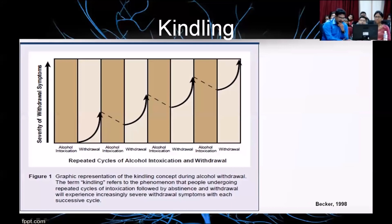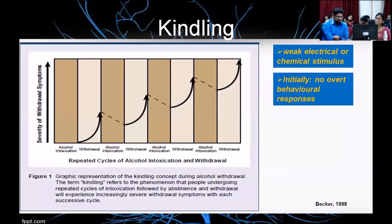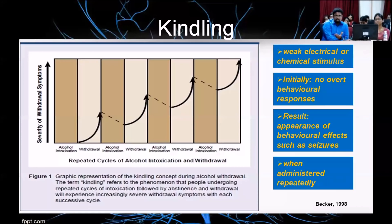This is an interesting phenomenon called kindling. Two theories were proposed for why people have withdrawal seizures: priming, where repeated exposure sensitizes the person, and kindling, where repeated episodes of withdrawal lead to more severe withdrawal over time. There are some animal models that support this, especially in mice. Kindling involves a weak electrical or chemical stimulus that initially produces no overt behavioral response, but over time results in behavioral effects such as seizures. Recent meta-analyses haven't shown strong support for this theory, but these are some explanations for why people have worse withdrawal episodes over time.